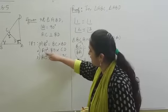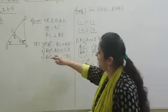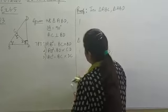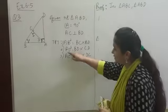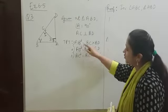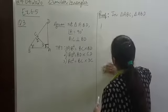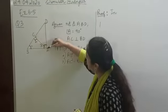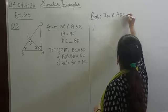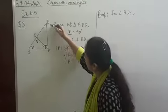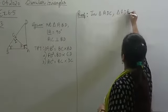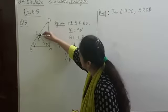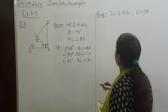Now, over to the second one. We need to prove that AD² equals BD into CD. For this, we need to take up two triangles which have AD as a common side. The triangles are ADC — the small triangle — and ADB, the big triangle. So we pick these two triangles with AD as a common side.